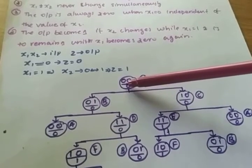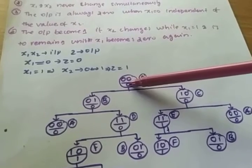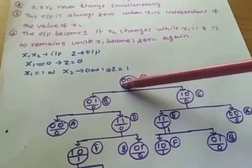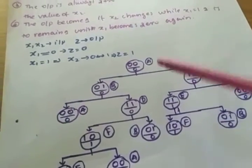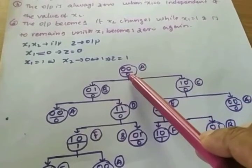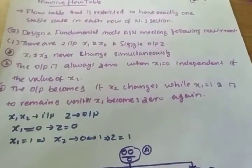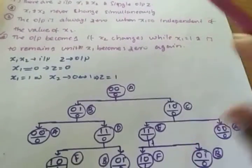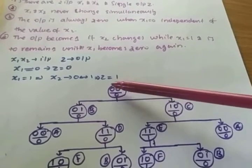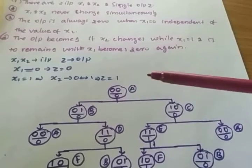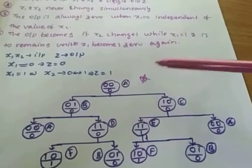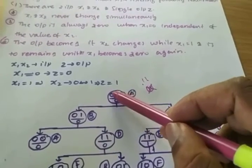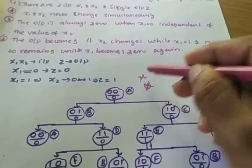Now there can be two conditions from state 0,0. Since x1 and x2 never change simultaneously, only one variable can change at a time. Keeping x1 as 0 and changing x2 to 1 gives combination 0,1. Since x1 is 0, output is 0. In the other case, x1 changes to 1 while x2 stays at 0, giving combination 1,0. x1 is now 1, so we check x2: previous state of x2 was 0, present state is 0 — no transition, so output is 0.